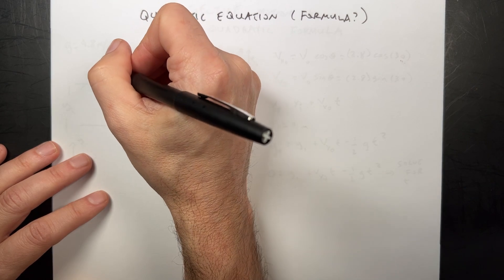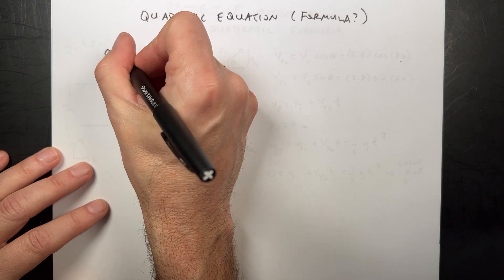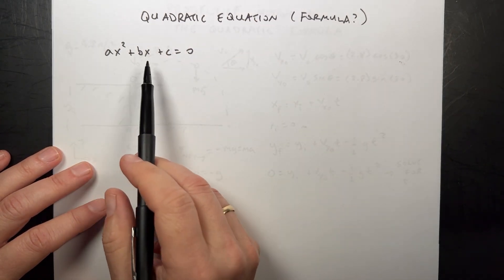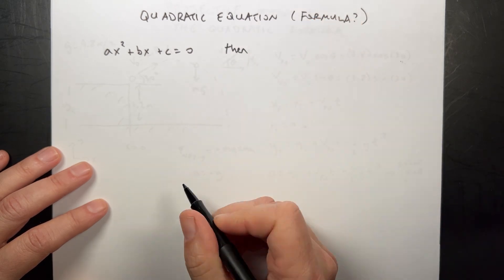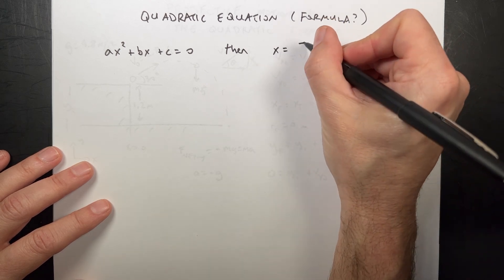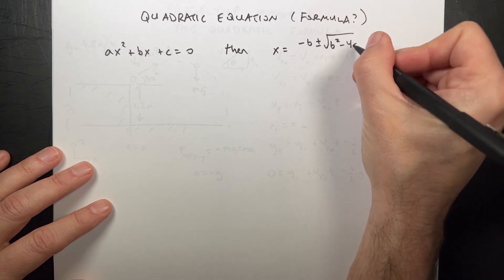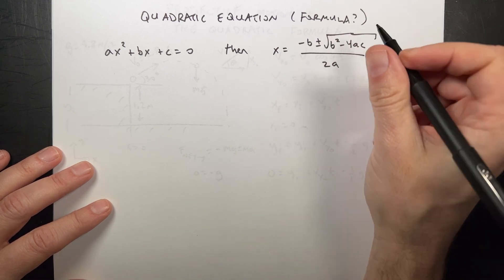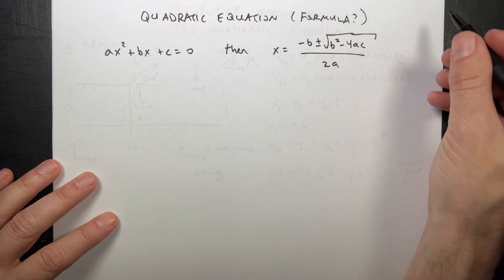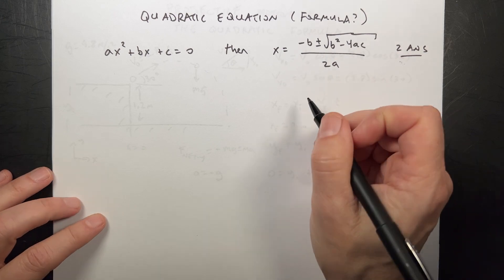This says that if I have an equation ax squared plus bx plus c equals zero, and a, b, and c are constants, then the value of x that solves that equation will be x equals negative b plus or minus the square root of b squared minus 4ac all over 2a. If you know the values of a, b, and c, you get two answers. I get one with plus and one with minus, and we're going to do both of those.